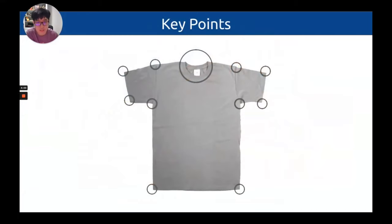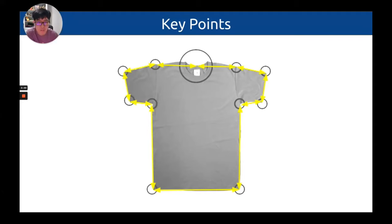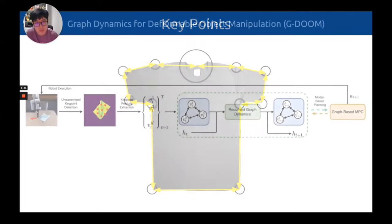In this work we take a different view: for objects like cloths and ropes, their dynamics can be sufficiently captured by a set of keypoints. This is similar to how humans manipulate cloth — we only consider key points like the shoulder, the collar, etc., without modeling the full object dynamics because it's not necessary. The keypoints can be further grouped into a graph where edges capture keypoint interactions and further improve model performance.